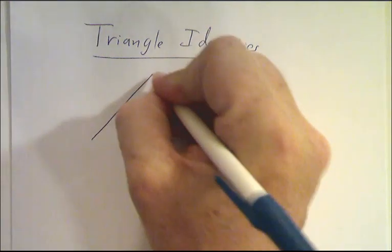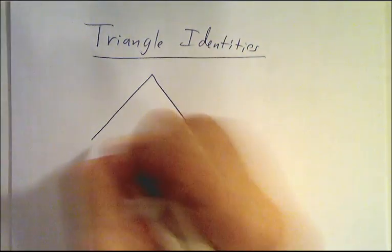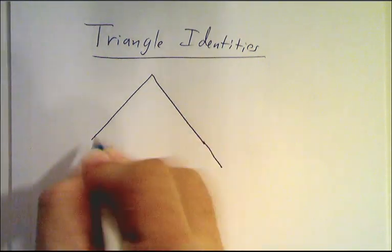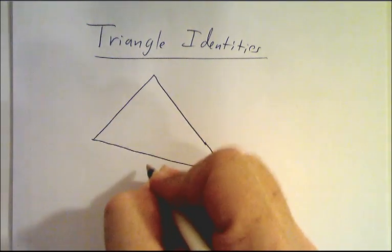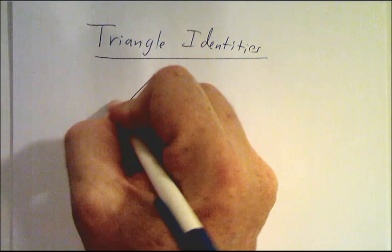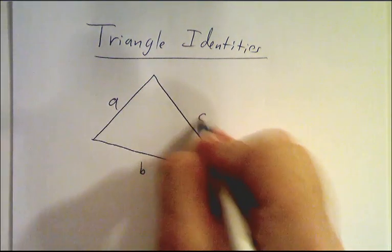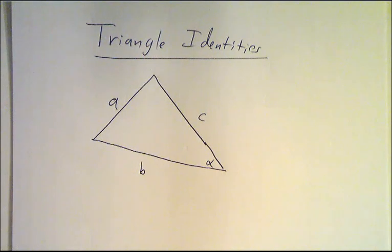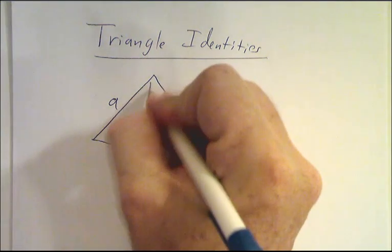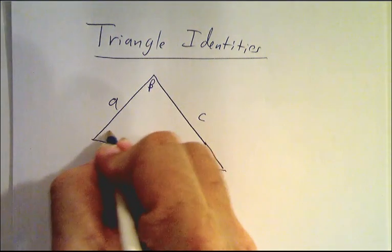Let's suppose we've got a general triangle, not necessarily a right triangle. So let's draw it like this. And we've got three sides, let's call them A, B, and C. And opposite side A will have angle alpha, opposite B will have angle beta, opposite C will have angle gamma.